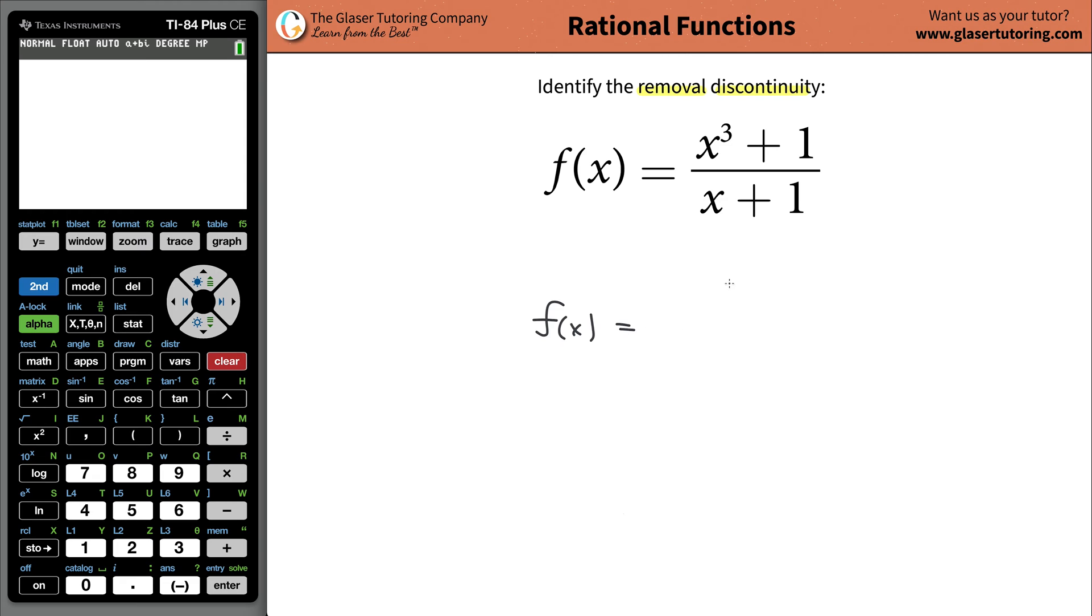So the first step we're going to have to do is fully factor everything in this equation. So it turns out that we can factor the top - we have a cube there, so we can find the factors there. A little tricky, but we can do it. And we'd also have to factor the bottom, but that's already in factored form, so we can kind of leave that alone.